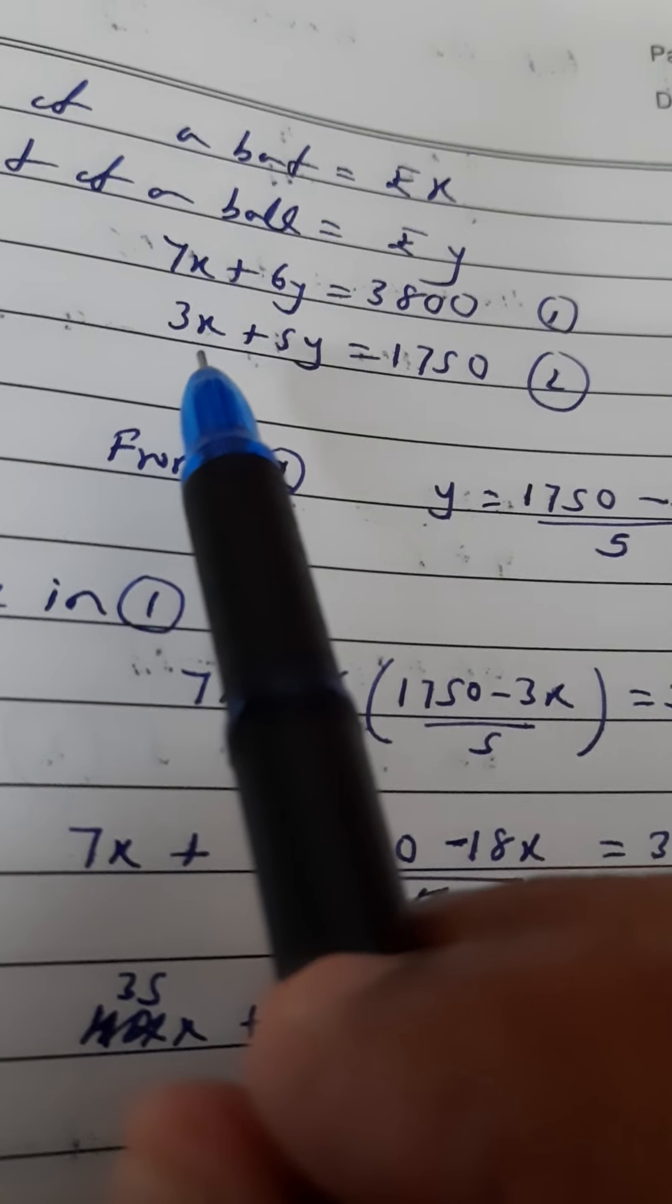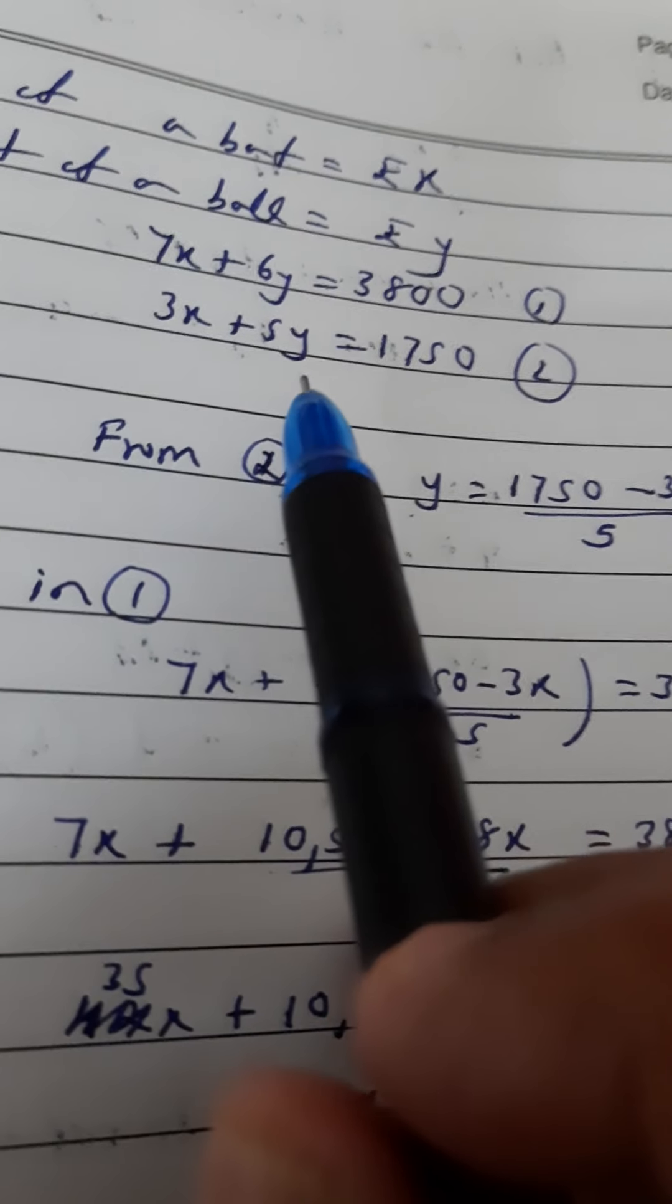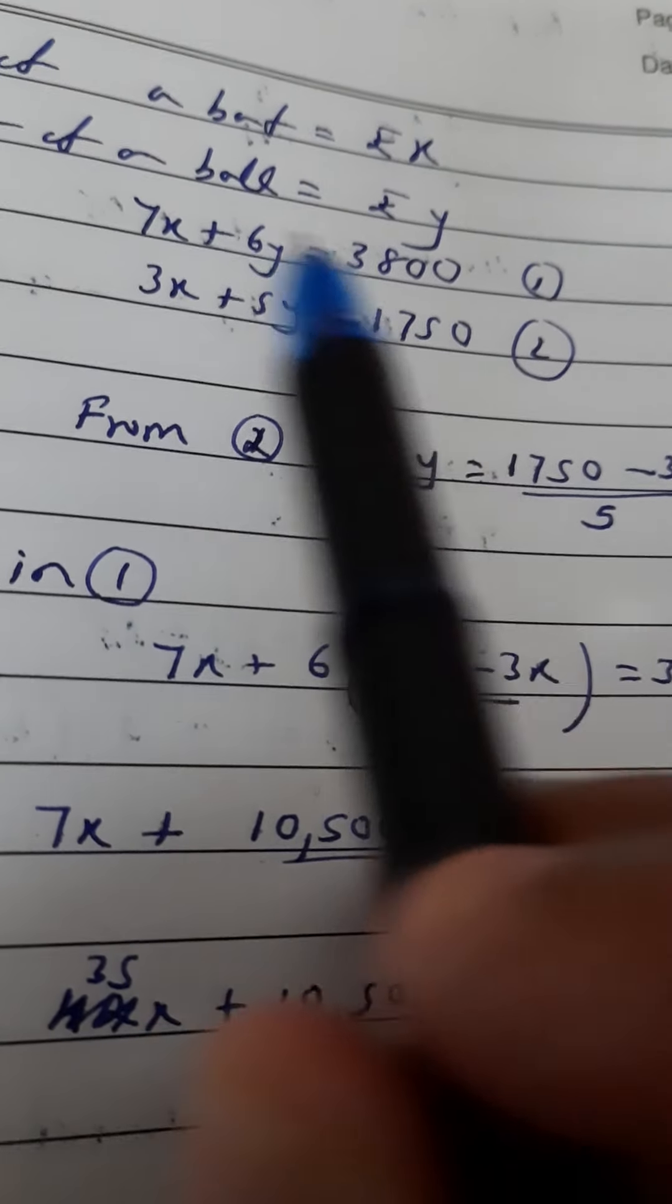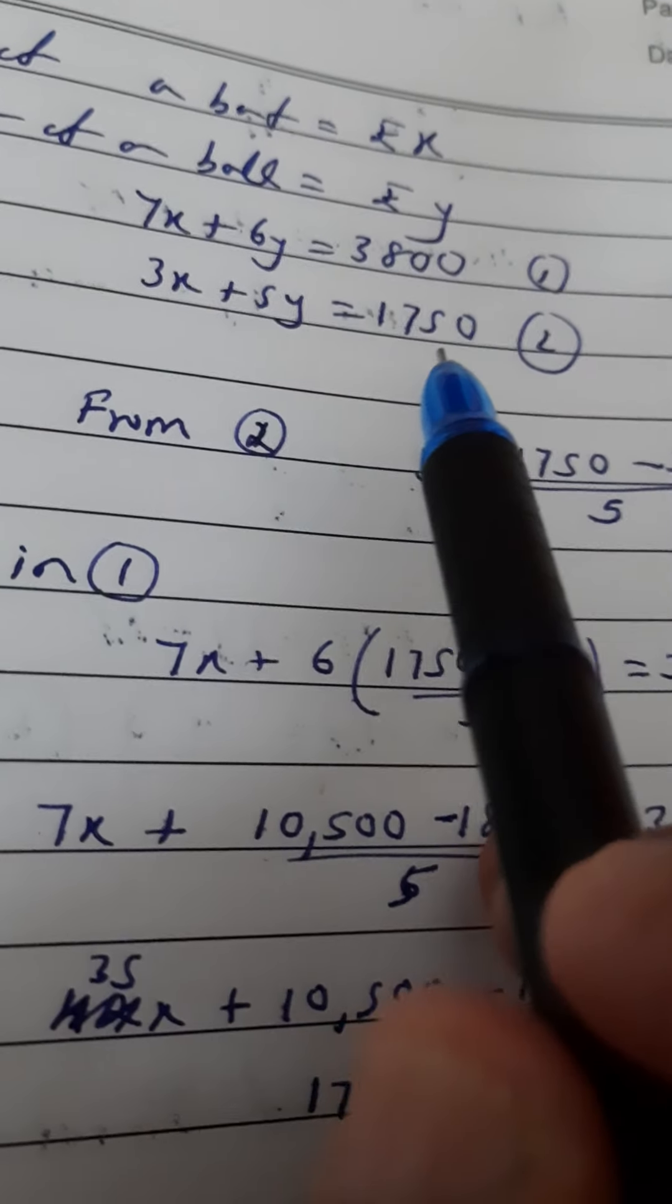Next line: 3 bats and 5 balls cost 1750. So 3x plus 5y equals 1750.